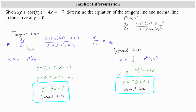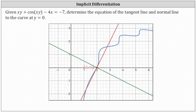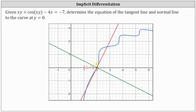Let's take a look at this graphically. The curve given by the implicit equation is the blue curve, and we can see the point two comma zero on the curve. The red line is the tangent line to the curve at two comma zero, with equation y equals two x minus four. The green line is the normal line — perpendicular to the tangent line at two comma zero — with equation y equals negative one half x plus one. I hope you found this helpful.